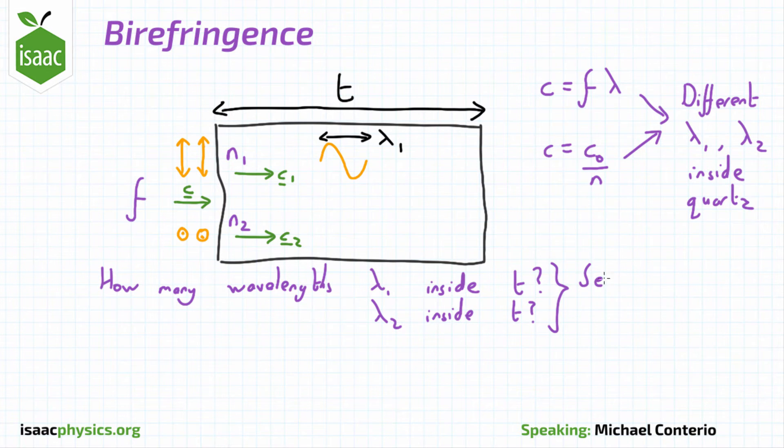This will give you two equations that you can combine by realizing that because we're looking for the minimum thickness of the quartz, the difference between the number of wavelengths must be exactly one-half.